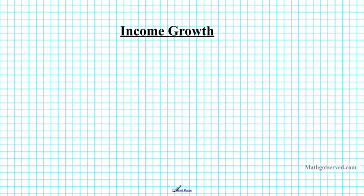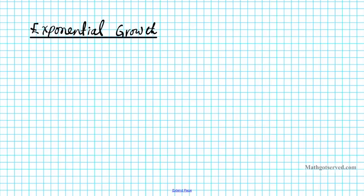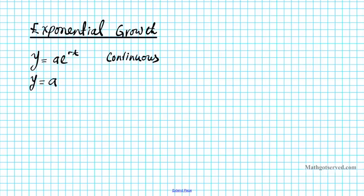Let's take a look at exponential growth. These are equations for exponential growth. For exponential growth, they can be broken down into continuous or discrete. For continuous growth, we have y equals a times e to the rt. And for discrete growth, we have y equals a times 1 plus r to the t.